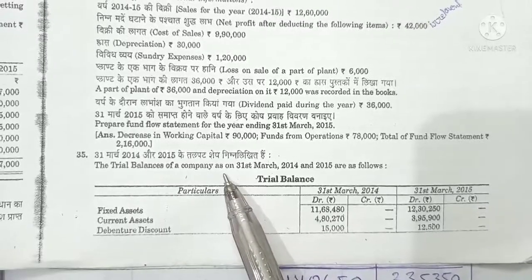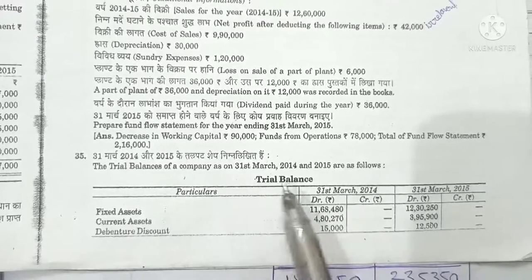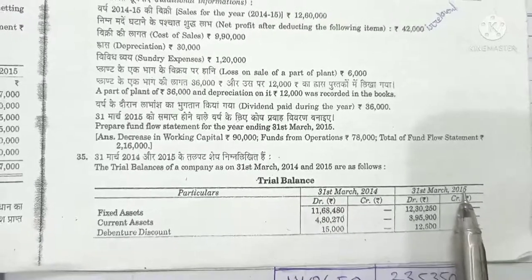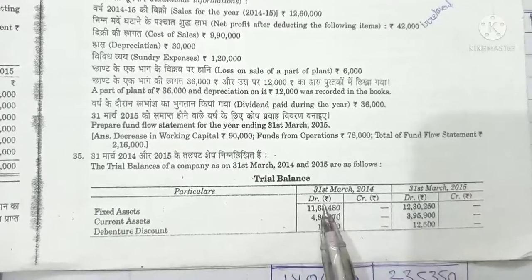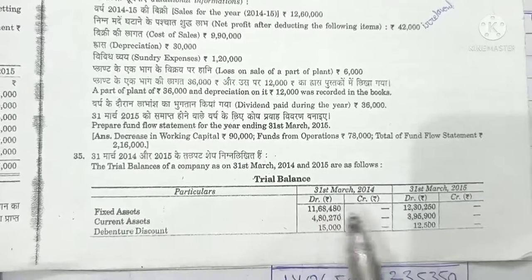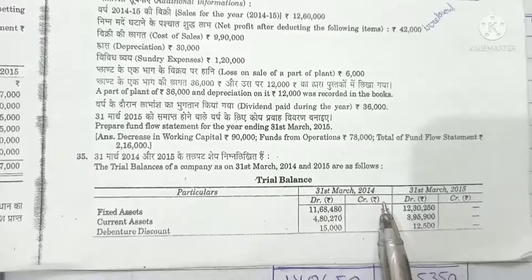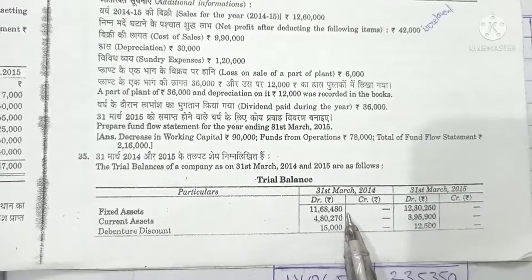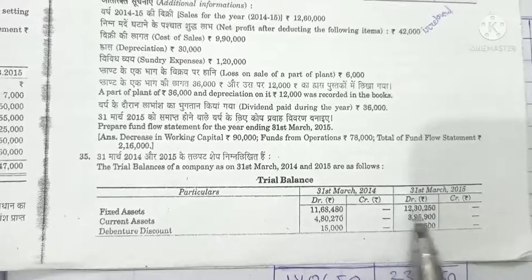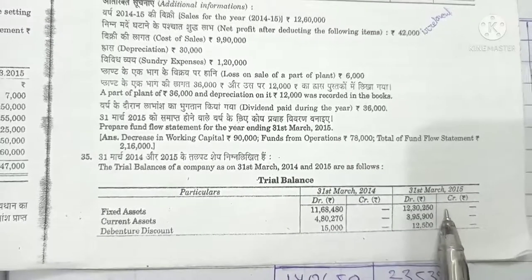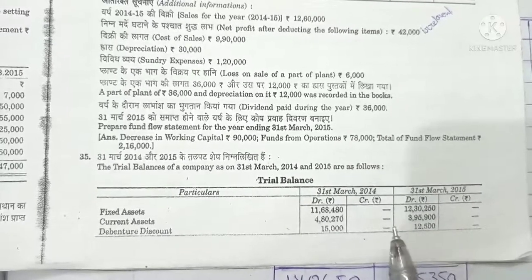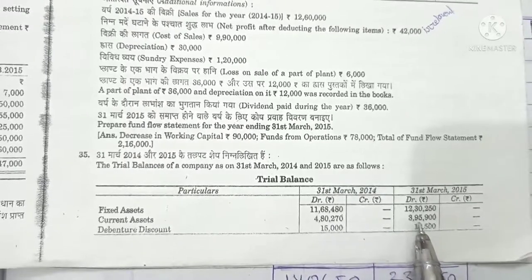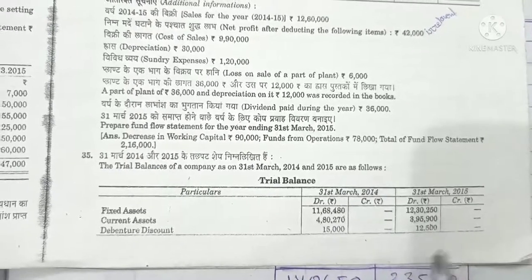Question No. 35. Here is a company trial balance in which we have 2014 as the opening year and 2015 as the closing year. Debit and credit represent our liabilities. Fixed assets are 11,68,480 and 12,30,250. Current assets are 4,80,270 and 3,95,900.